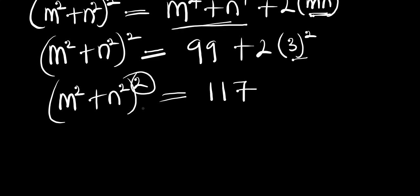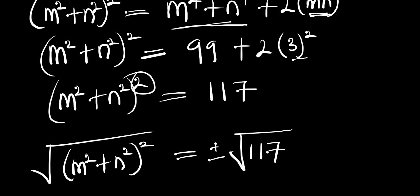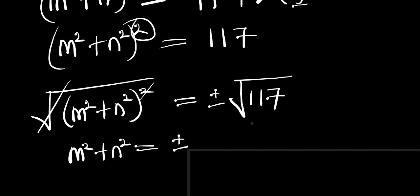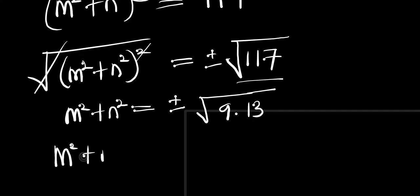To eliminate the square, we take the square root of (m² + n²)². This gives us m² + n² equals plus or minus the square root of 117, which we can write as the square root of 9 times 13, so m² + n² equals plus or minus 3 root 13.